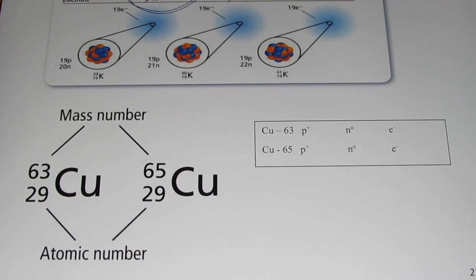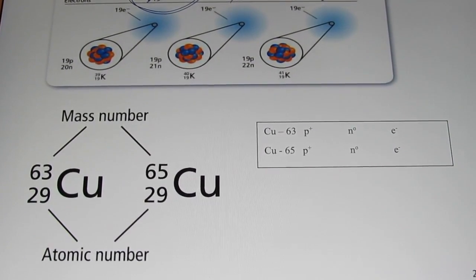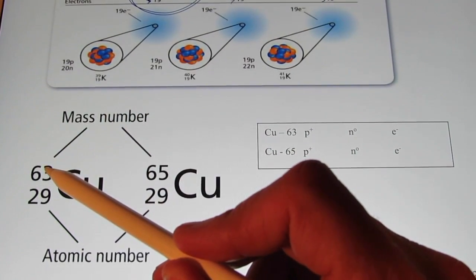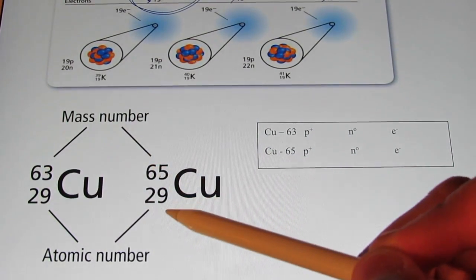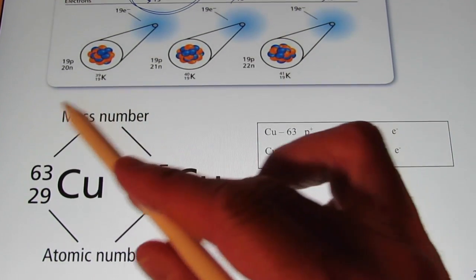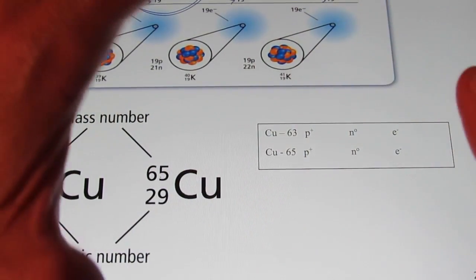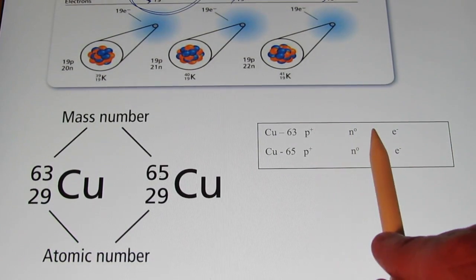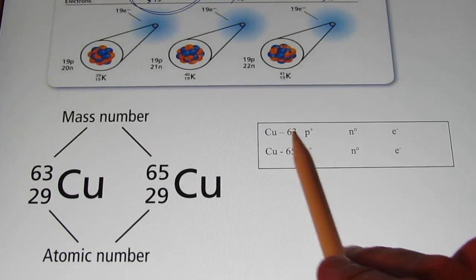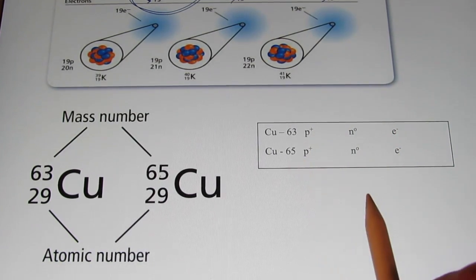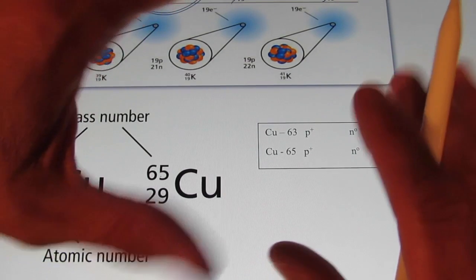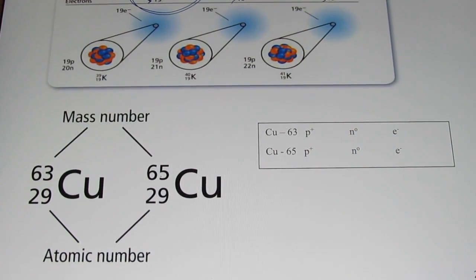Why don't you take a minute and do it for these two isotopes of copper. I've given you the mass number in the upper left-hand corner and the atomic number in the lower right-hand corner. With that information, fill out the chart — tell me how many protons, neutrons, and electrons copper-63 and copper-65 each have. Pause the video now and do that.